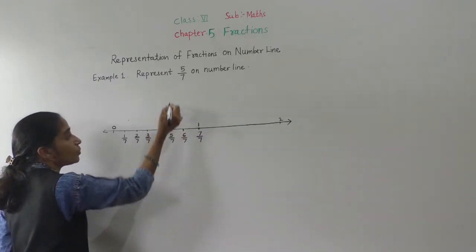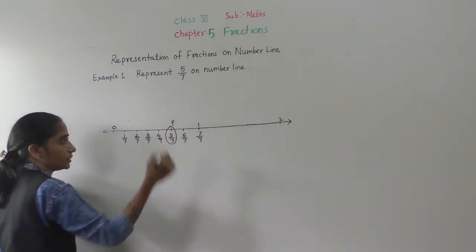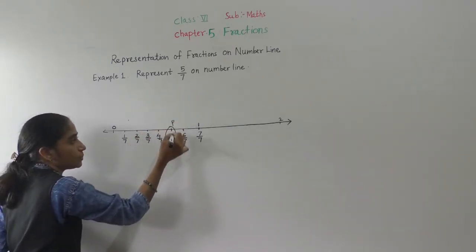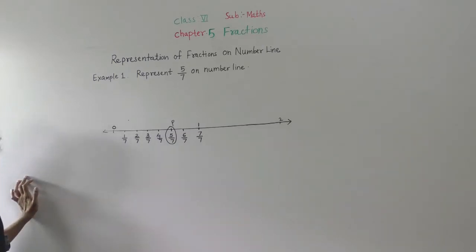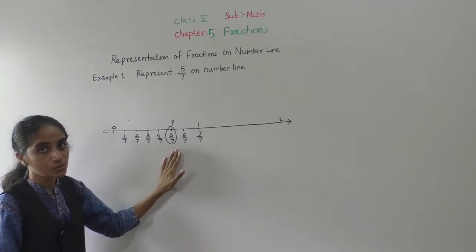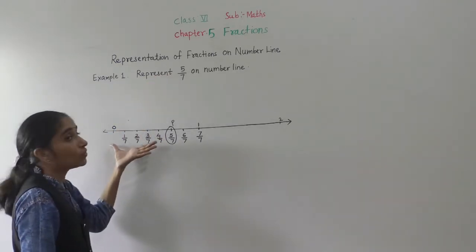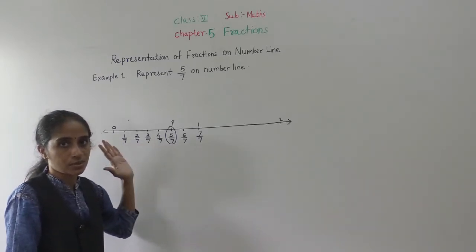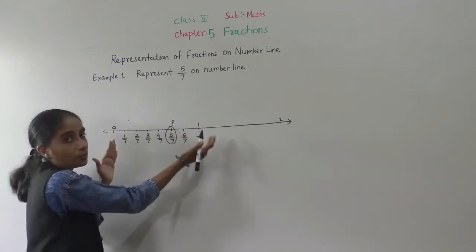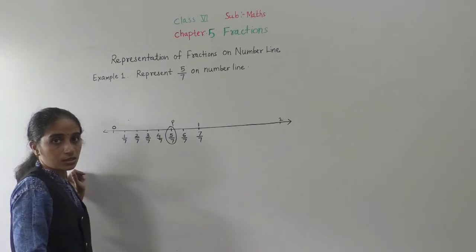So where is 5 upon 7 in reality? We have to give the name P. P represents 5 upon 7 on a number line. Denominator is 7, so make 7 equal parts from 0 to 1. From 0 to 1, make 7 equal parts, and then we can show 5 upon 7 on the number line.